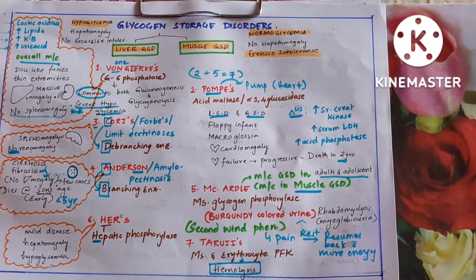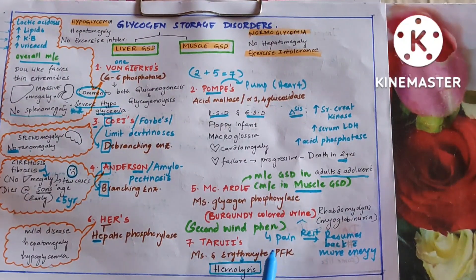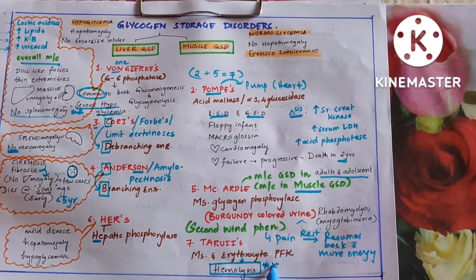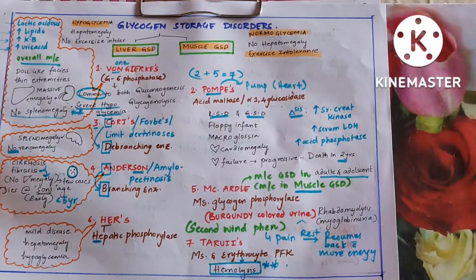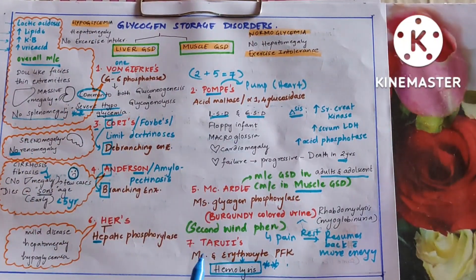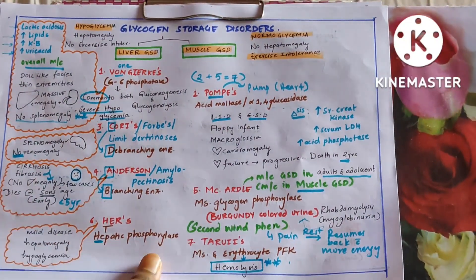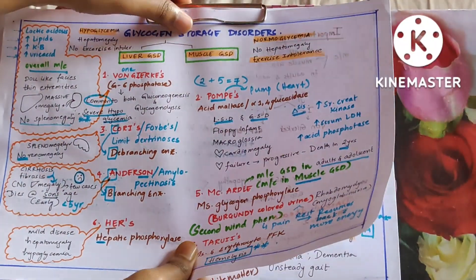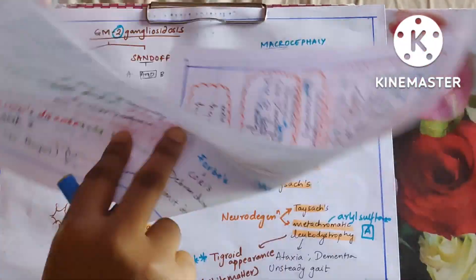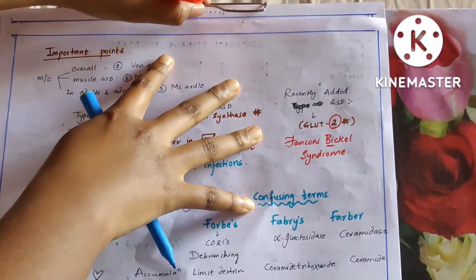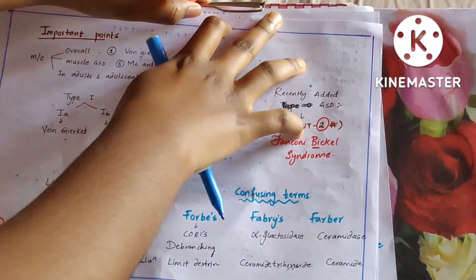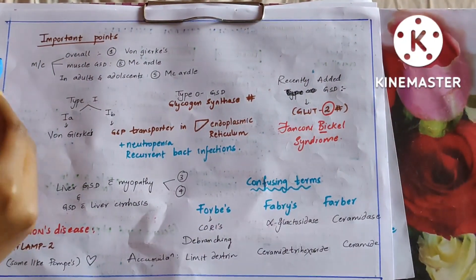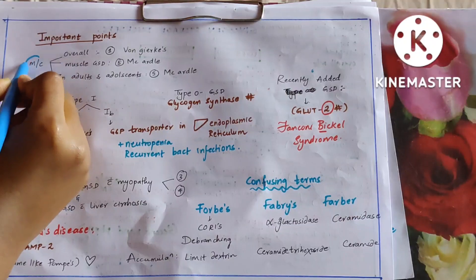Tarui's disease is due to muscle and erythrocyte phosphofructokinase deficiency, which leads to hemolysis. HC for Hers' — hepatic phosphorylase — whereas muscle phosphorylase is McArdle's disease. M for muscle, H for hepatic — both are glycogen phosphorylase enzymes.